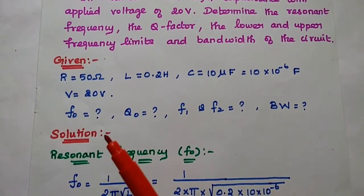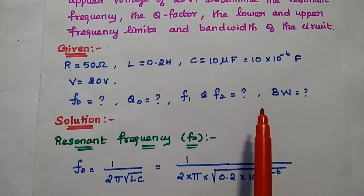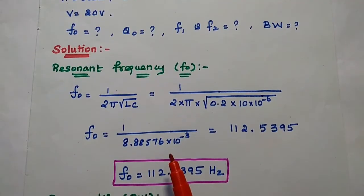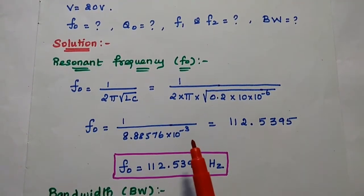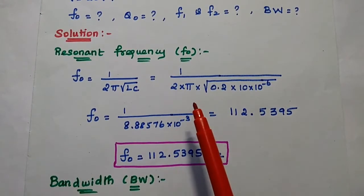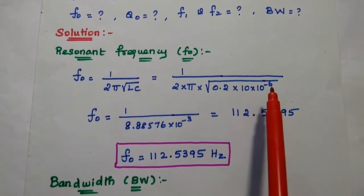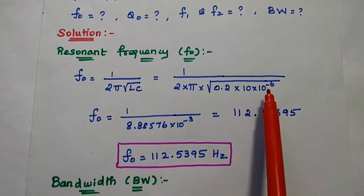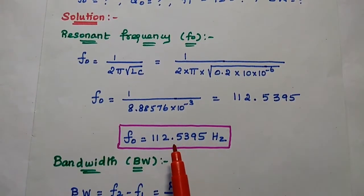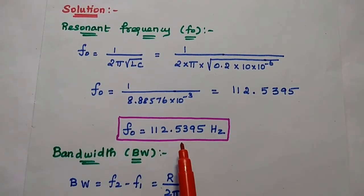We are going to find out the resonant frequency, quality factor, F1, F2 and bandwidth. First, the resonant frequency F0 equals 1 by 2π square root of LC. Substituting: 1 by 2π square root of 0.2 multiplied with 10 into 10 to the power minus 6. After simplifying using a calculator, we get the resonant frequency as 112.5395 hertz.